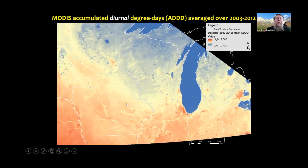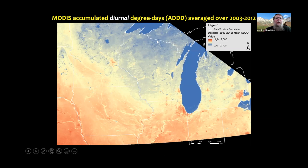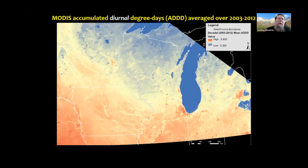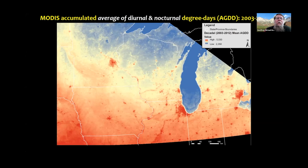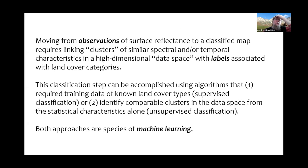Looking at only the daytime thermal data, there's not the same amount of contrast. There is contrast particularly in more heavily vegetated areas, but the contrast between riparian areas that came out in the nighttime image is not there. In the zoomed daytime and nighttime comparison, the intensely red blotches are where you're going to find urban heat islands.